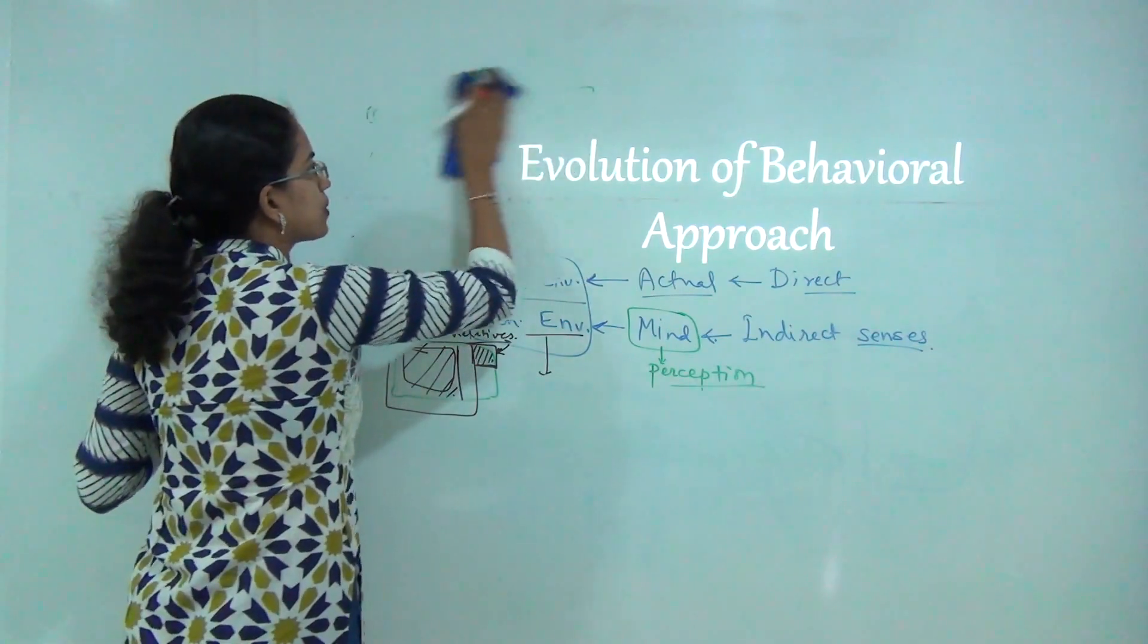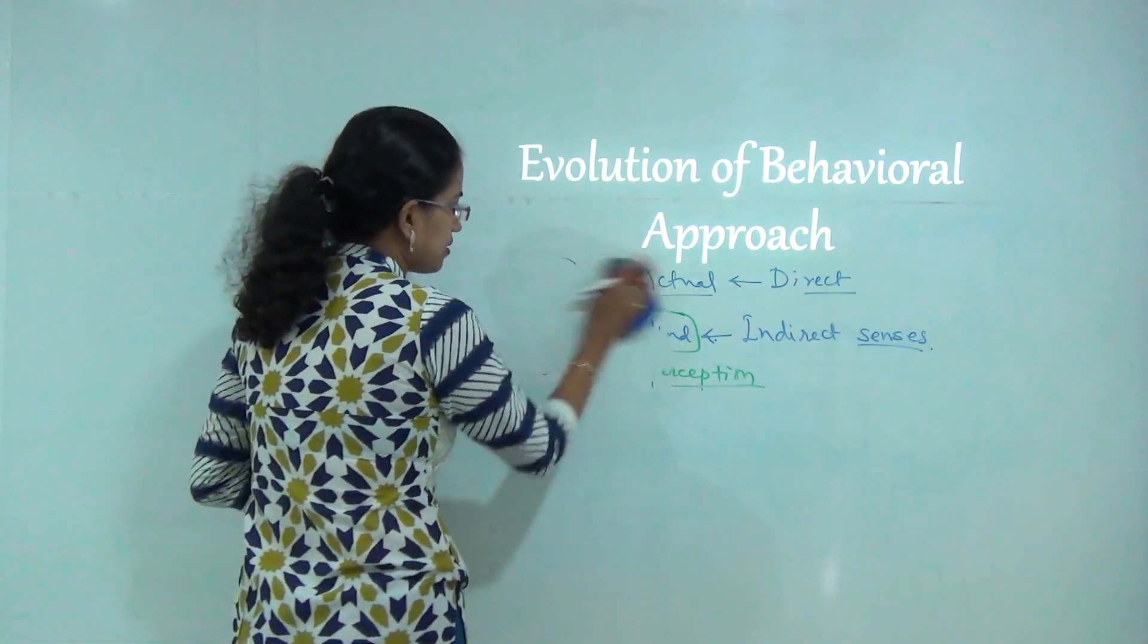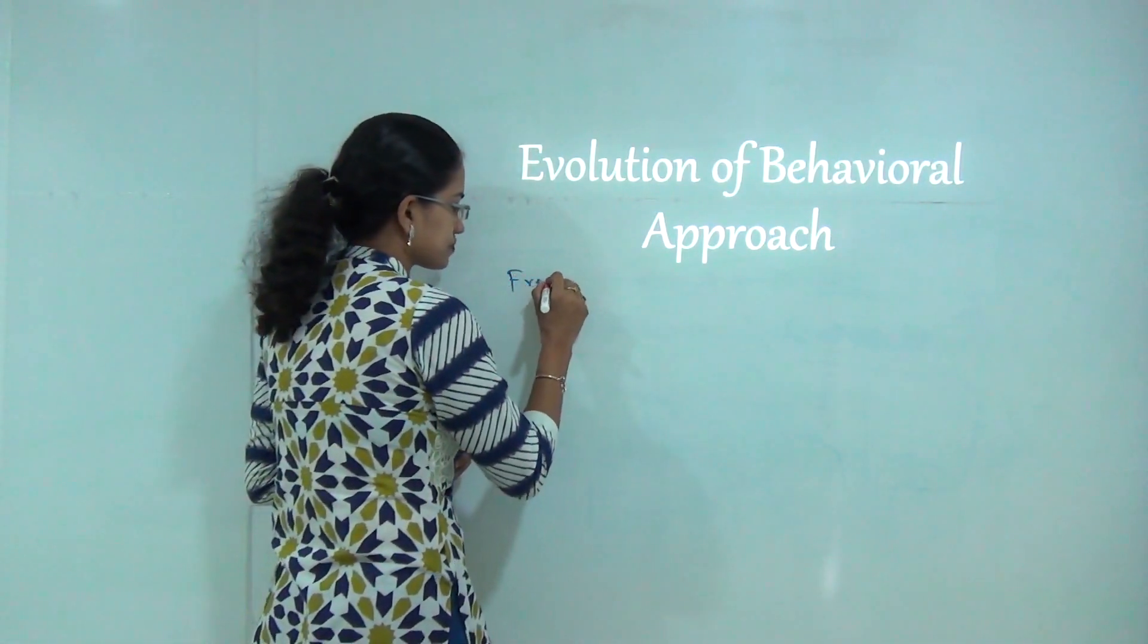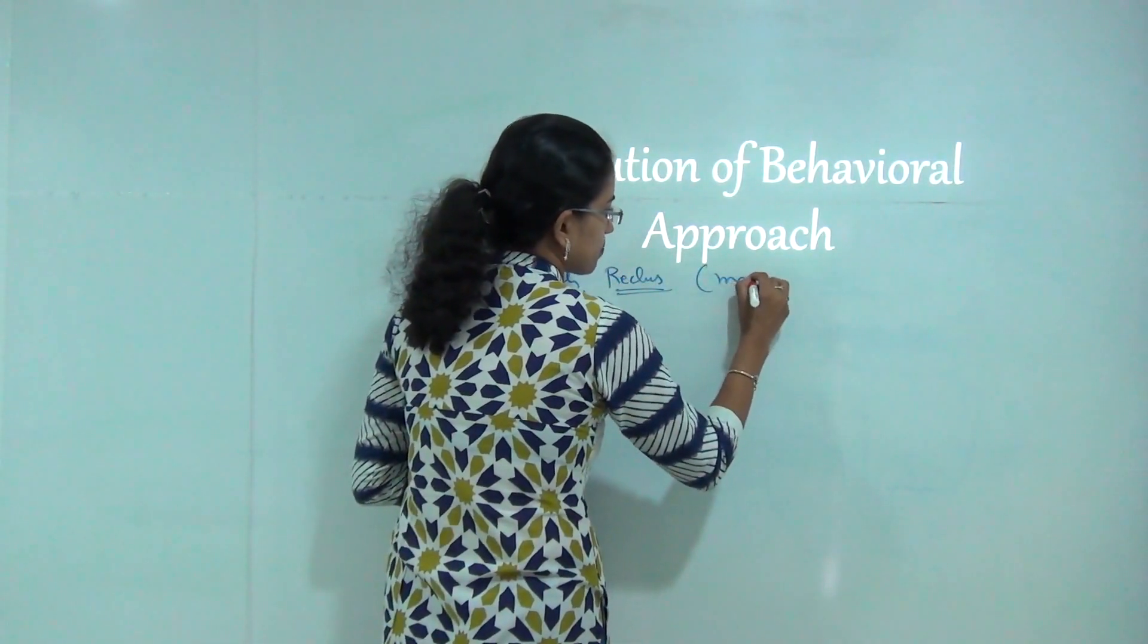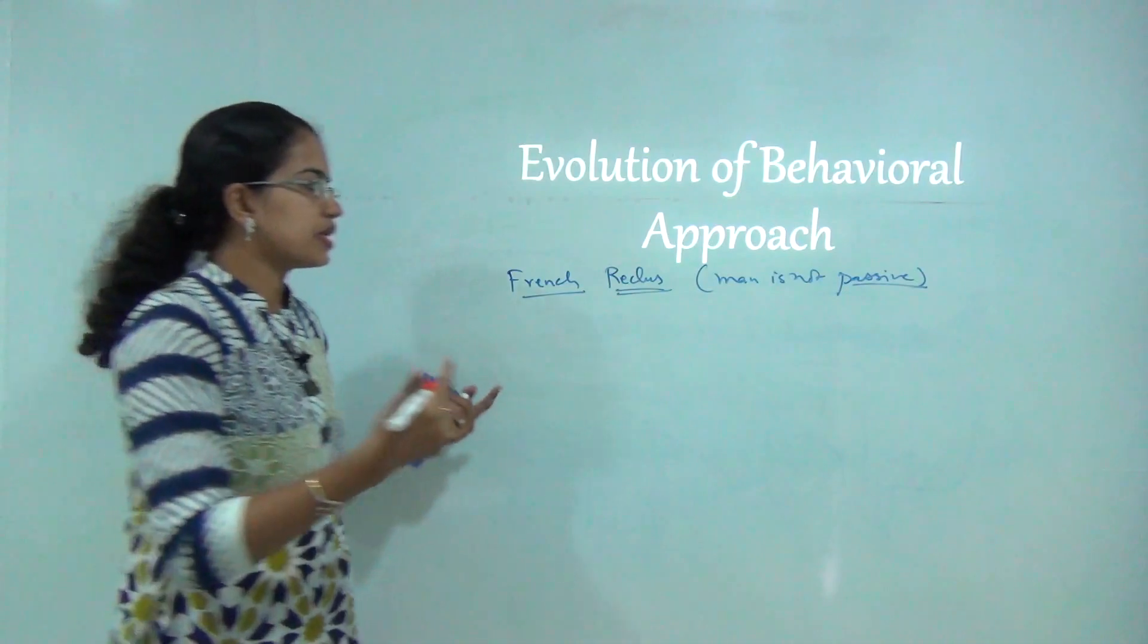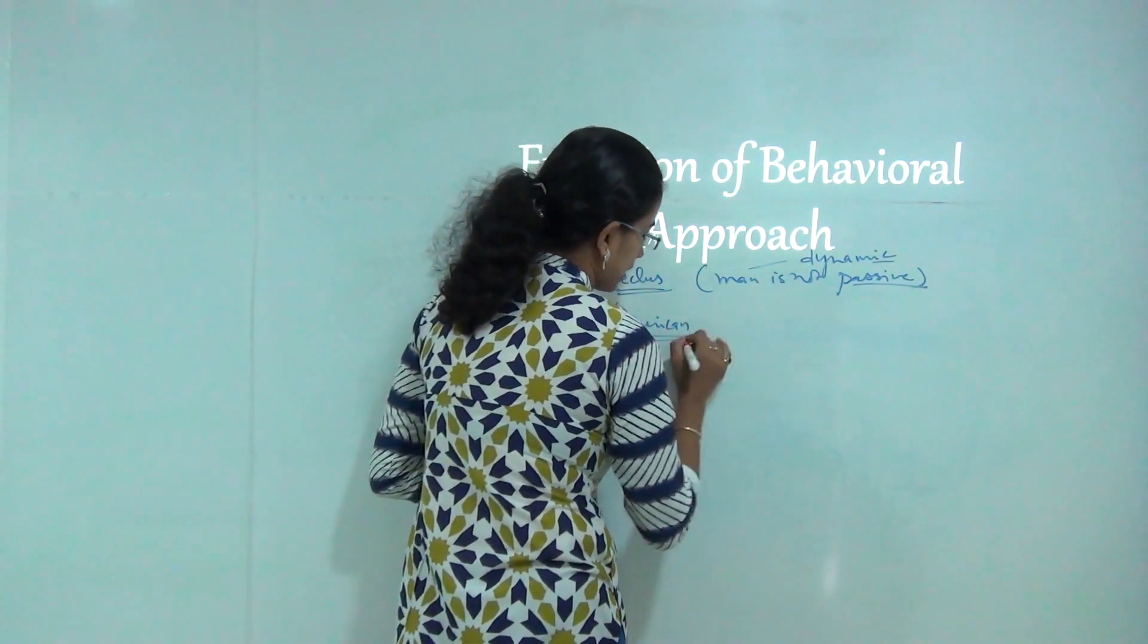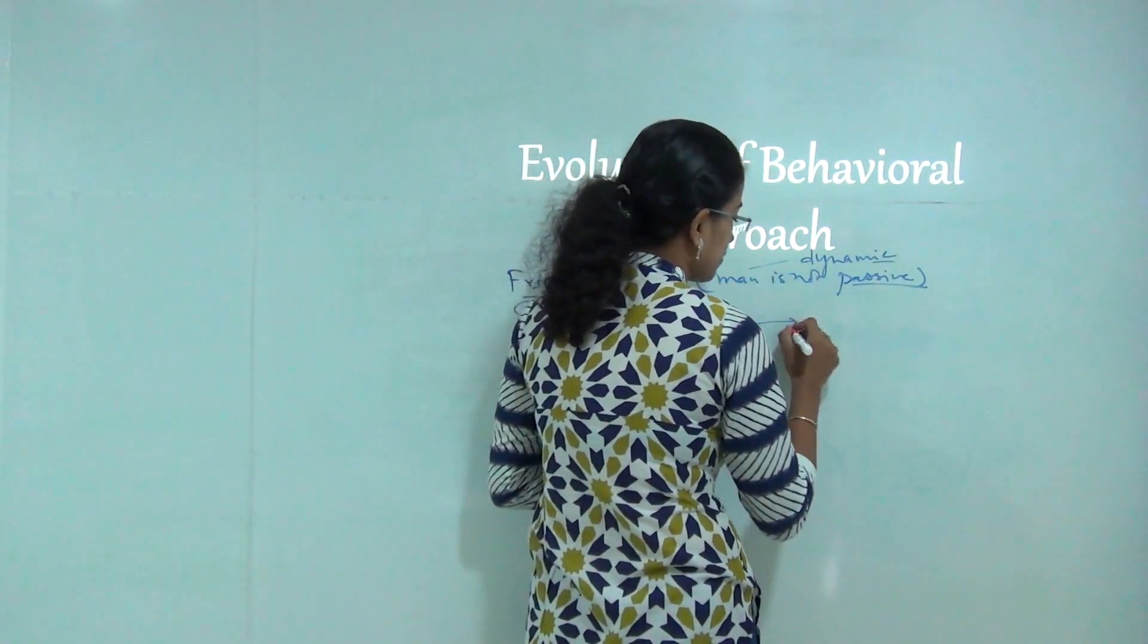Now let's see how this behavioral approach evolved. This started long back with the concept propounded by Kant, and later Reckless tried to bring it forward. Reckless was a French person and he explained that man is not passive but works actively, and there are changes that man keeps doing. He is dynamic in nature. Next was Saucer, an American, who explained the concept of interaction of man and environment and that this interaction affects the physical surroundings.